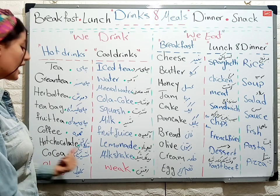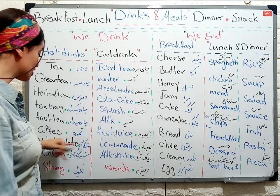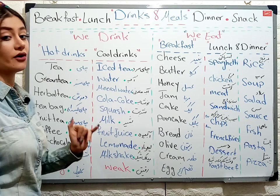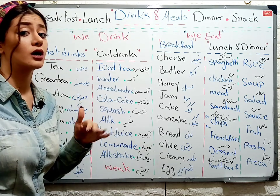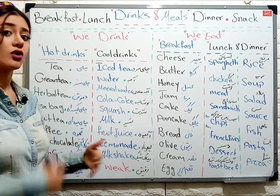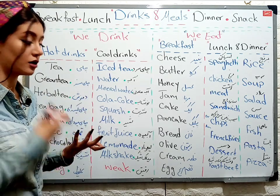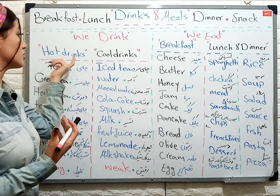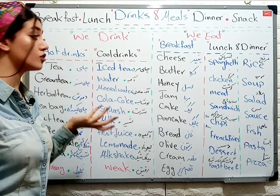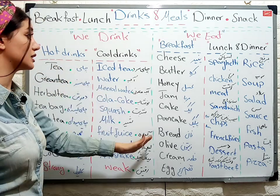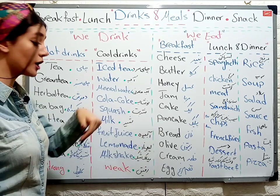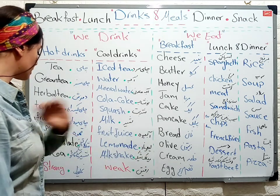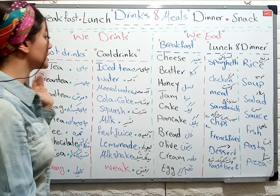Hot chocolate — I love it. Hot chocolate — شکلات داغ. Cocoa — cocoa means شیر کاکائو. I prefer to drink it hot. من ترجیح میدم که شیر کاکائو داغ بخورم. But it can also be in the cool drinks section.